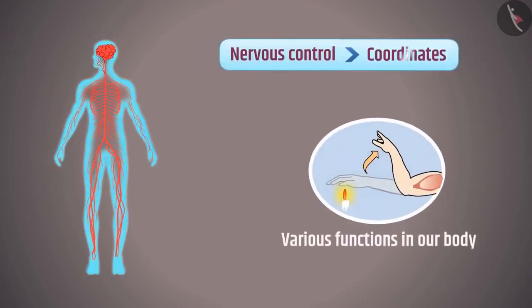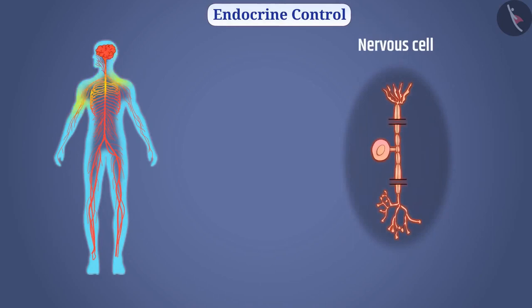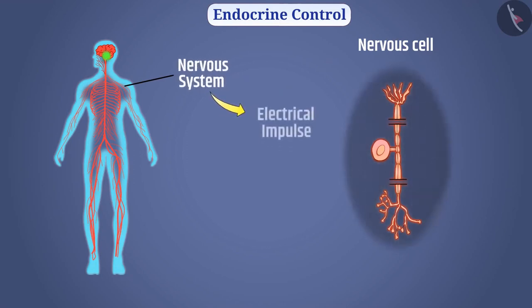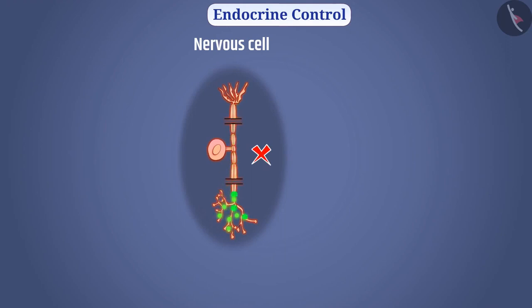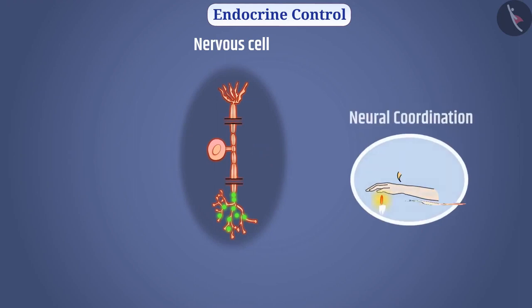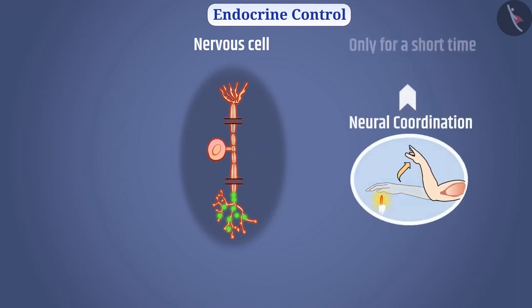Nervous control coordinates various functions in our body, but not every cell is connected to the nervous system. Therefore, the nervous system cannot carry electrical impulses to all cells. Also, cells do not generate and communicate electrical impulses continuously — there is some time needed before producing and transmitting another impulse. Neural coordination is fast but only effective for a short time.